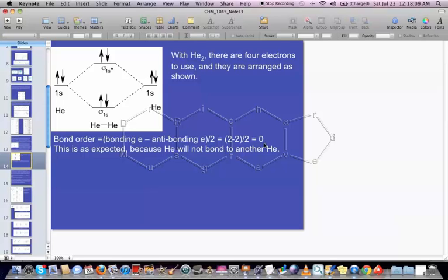And the underlying reason for that is because we end up getting two electrons in the anti-bonding orbital, and it sort of cancels the electrons that we would put in the bonding orbital.